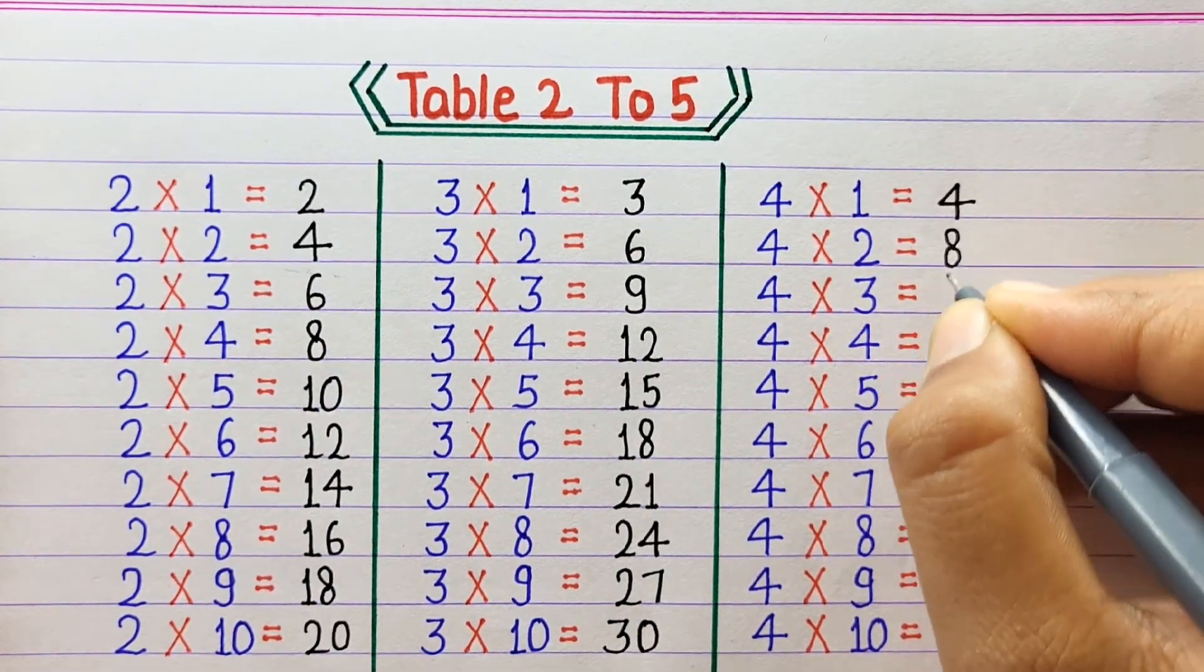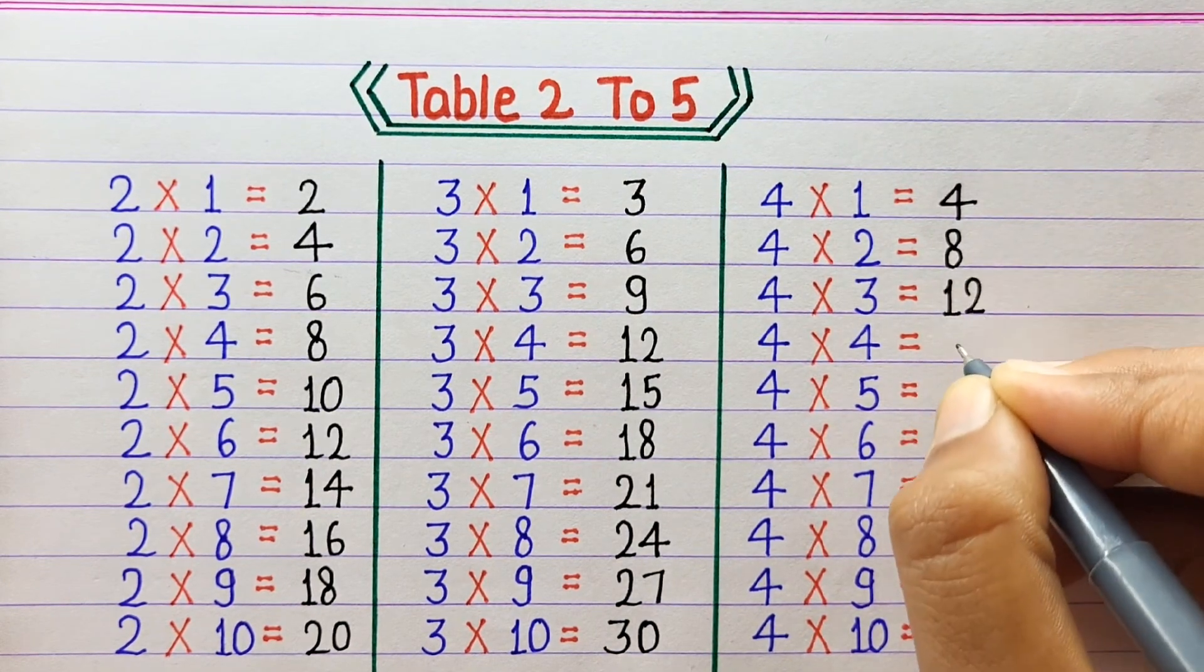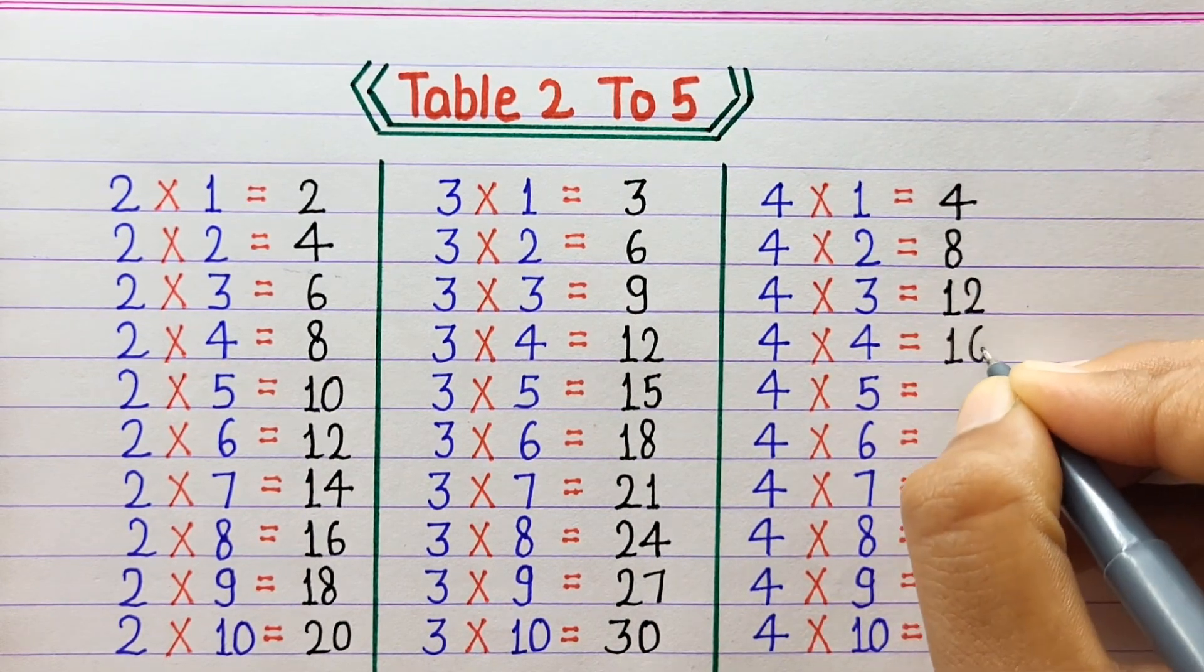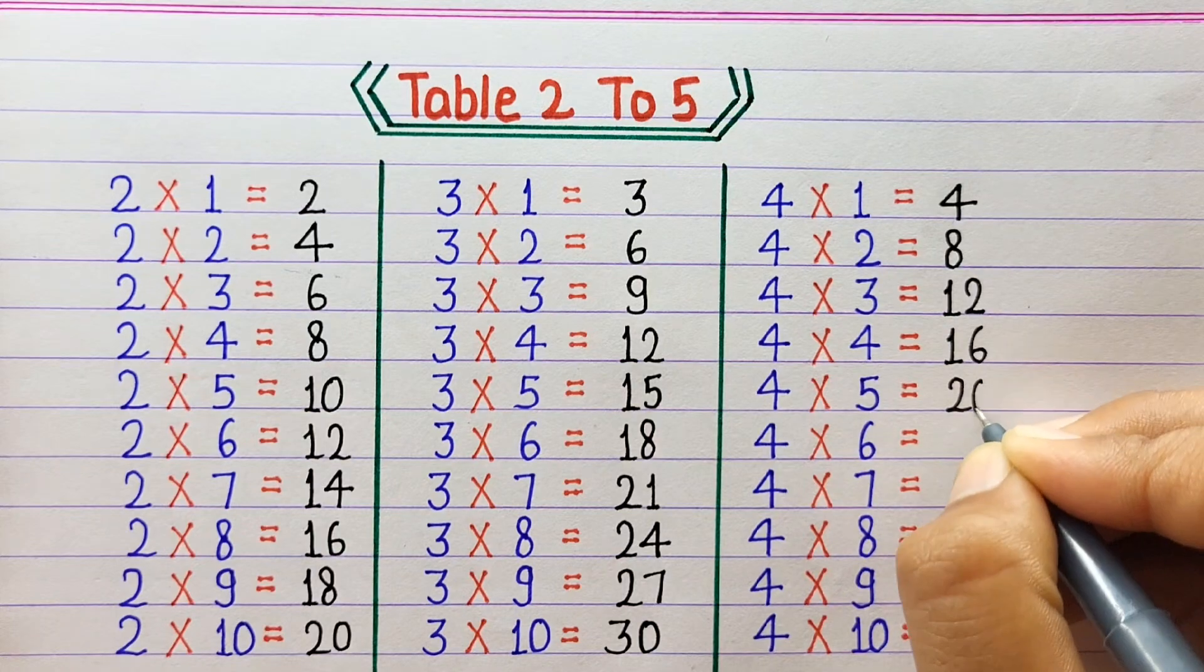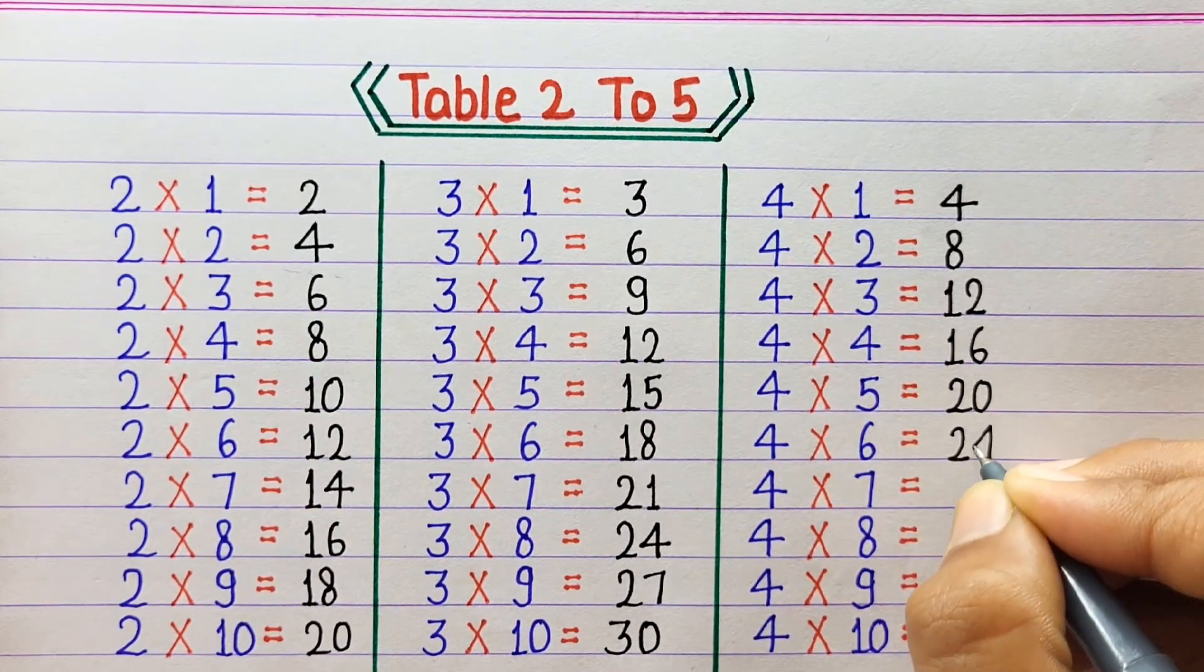4 times 2 is 8, 4 times 3 is 12, 4 times 4 is 16, 4 times 5 is 20, 4 times 6 is 24.